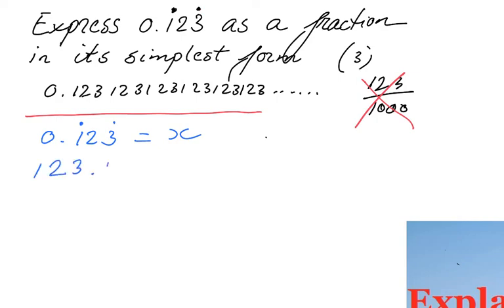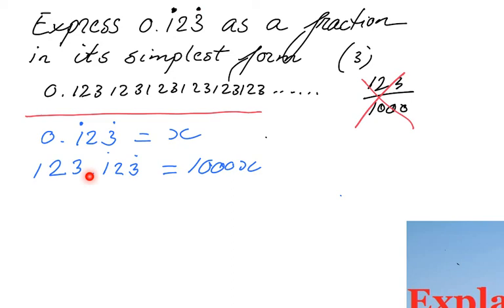So the number becomes 123.123123... And in order to have done that, how many places did I move the decimal point? I moved it 1, 2, 3 places — so I multiplied by 1000. Therefore 1000x equals 123.123123... That is a very important step. You want to get the entire recurring part on the left side of the decimal point, and in this case we multiplied by 1000 — we moved the decimal point three steps.